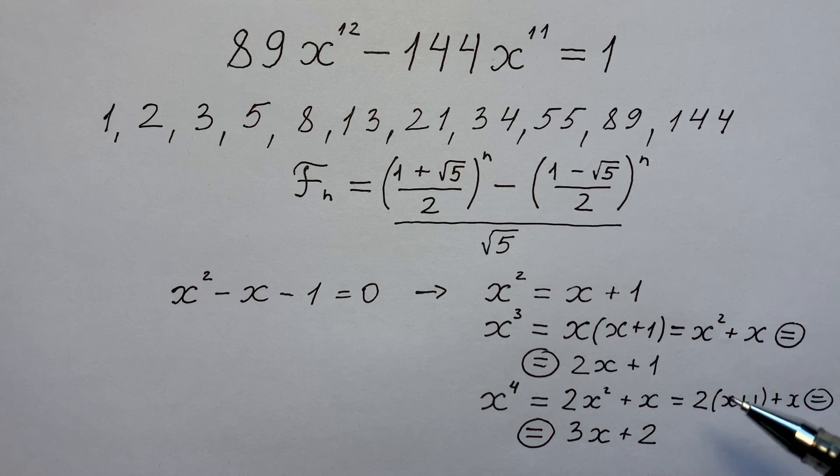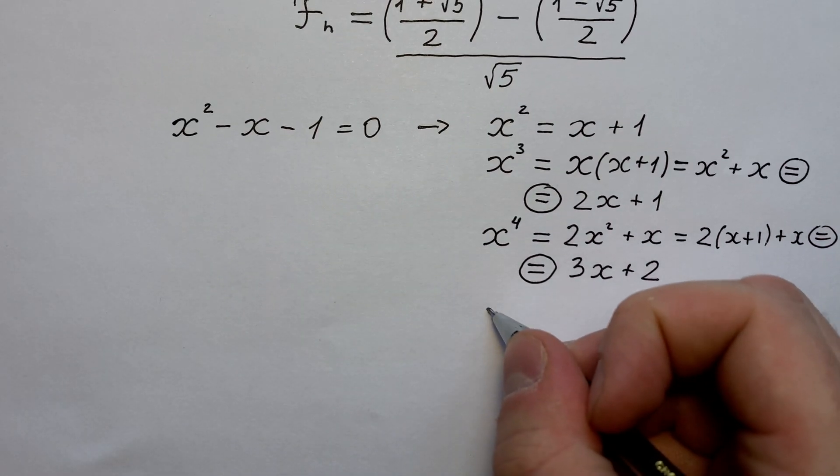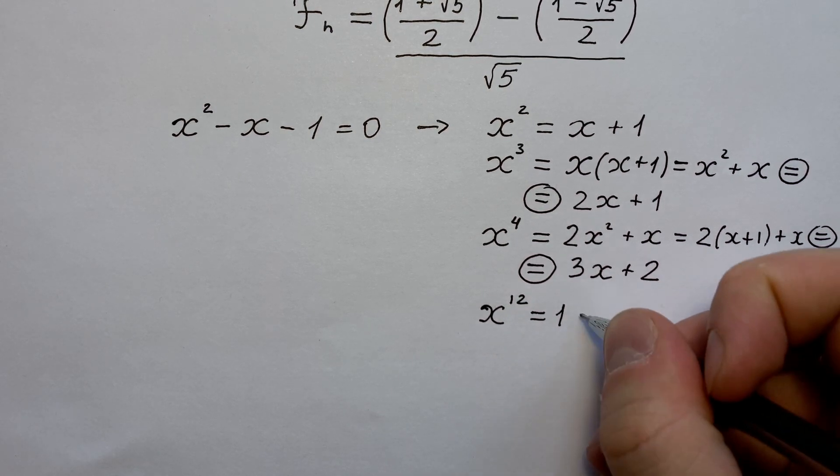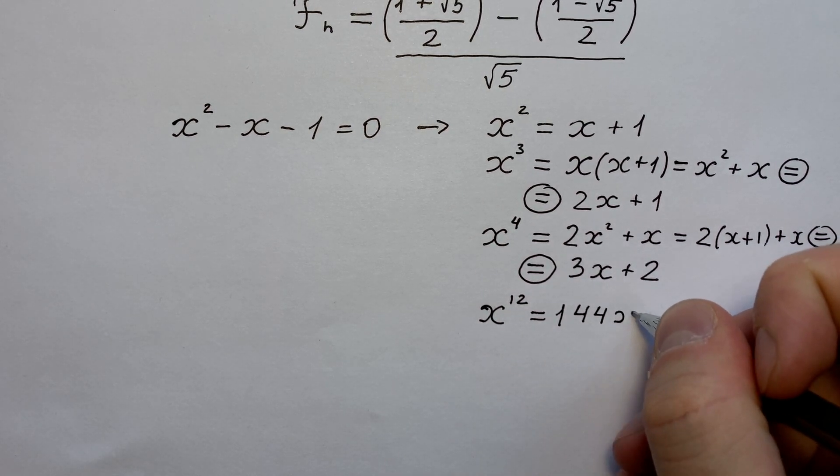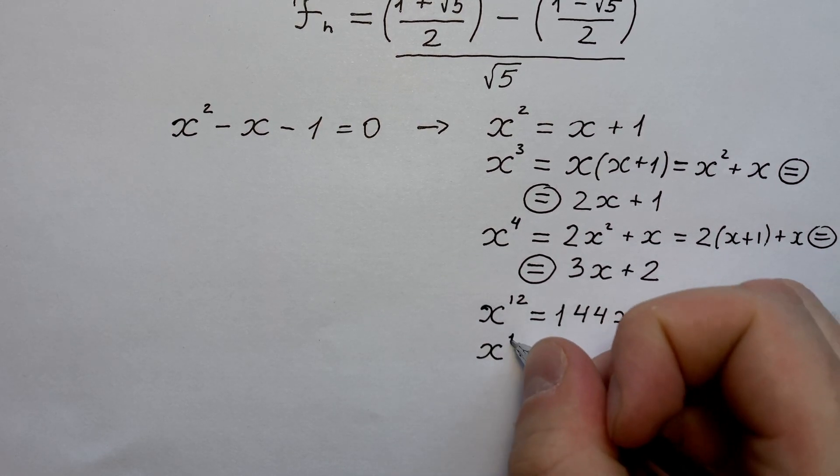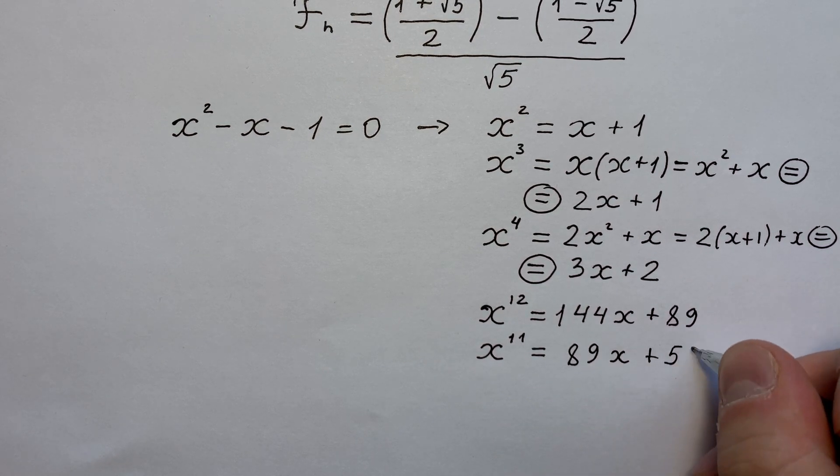We take the next expression times x. In that way, you can check that x to the power of 12 equals 144x plus 89, and x to the power of 11 equals 89x plus 55.